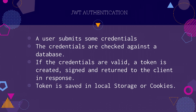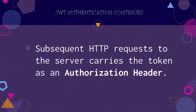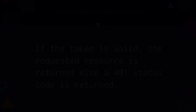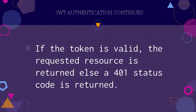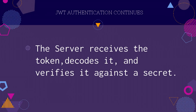The process of JWT authentication: a user submits credentials, the credentials are checked against the database. If the credentials are valid, a token is created. The token is signed and returned to the client in the response. The token is either saved in local storage or saved in a cookie. Subsequent HTTP requests to the server carry the token as an authorization header — many of us already do this in AngularJS or React apps. If the token is valid, the requested resource is returned, else a 401 is returned. The server receives the token, decodes it, and verifies it against the secret on the server.